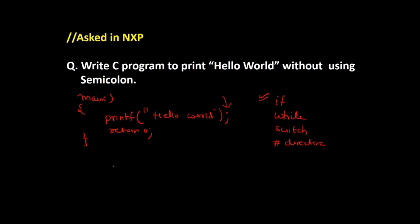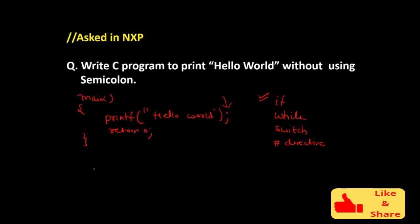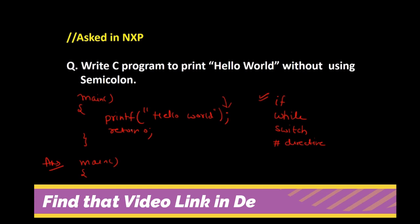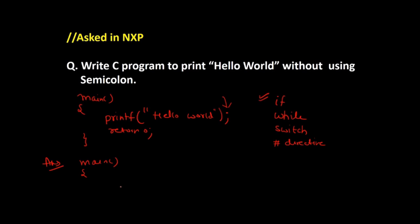Let's discuss how we can print it using if. In main, you know that the printf function returns an integer value — as discussed in previous videos, printf returns the number of characters it has printed on the console. So if we write printf with our message 'Hello World', printf will return 11: 'hello' has five characters, 'world' has five characters, and there is one space.